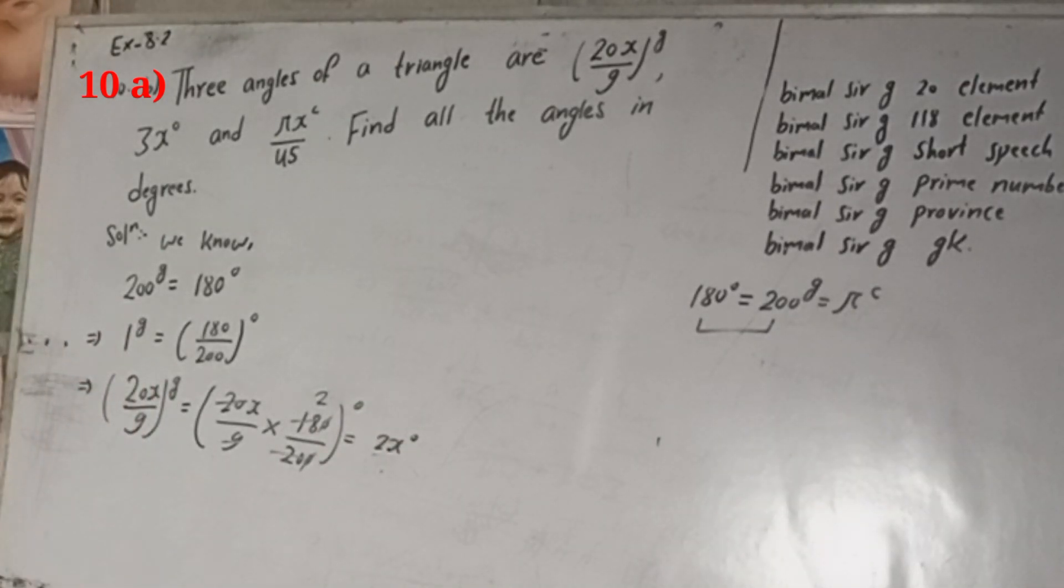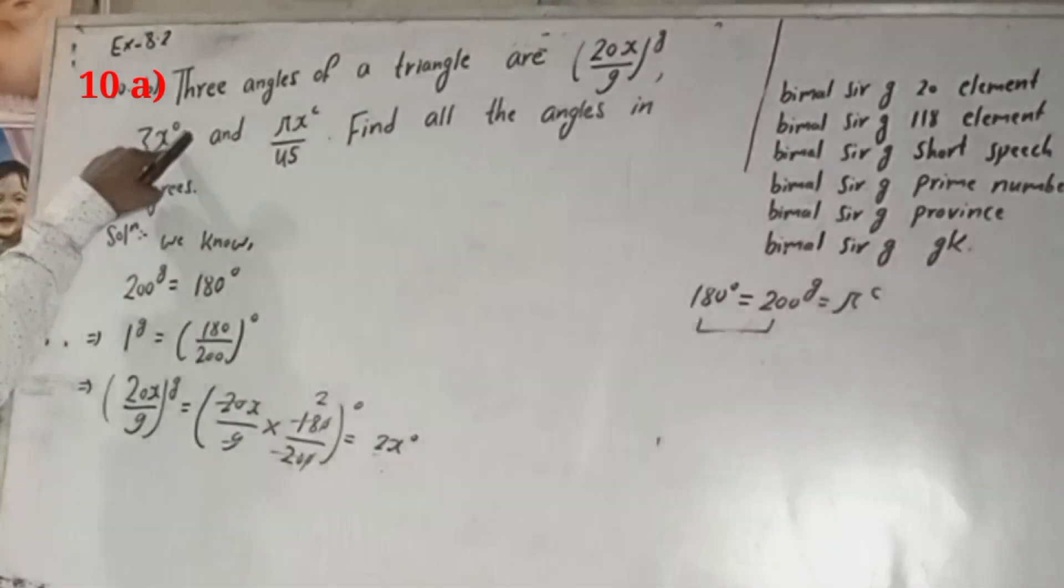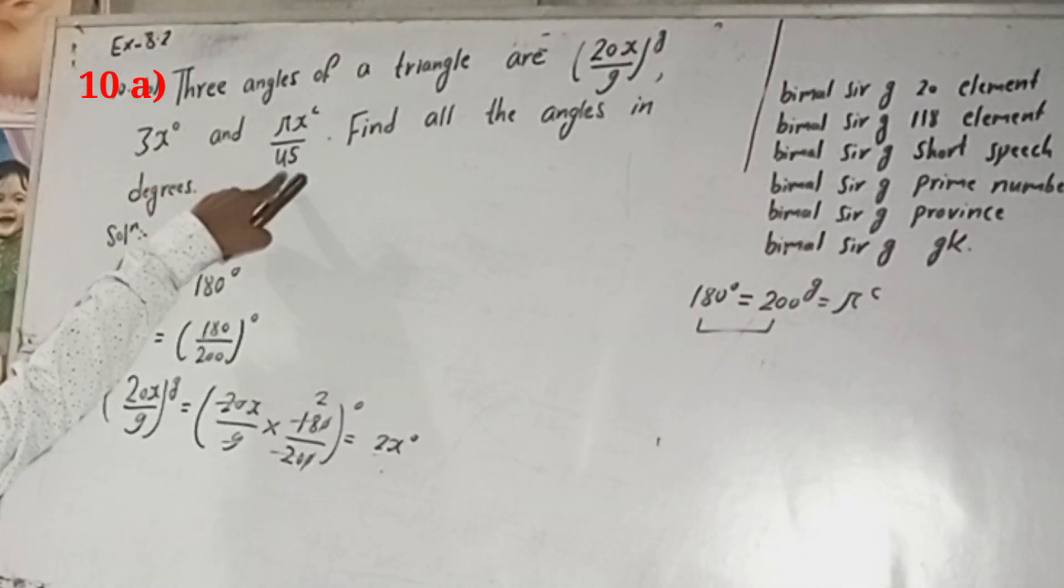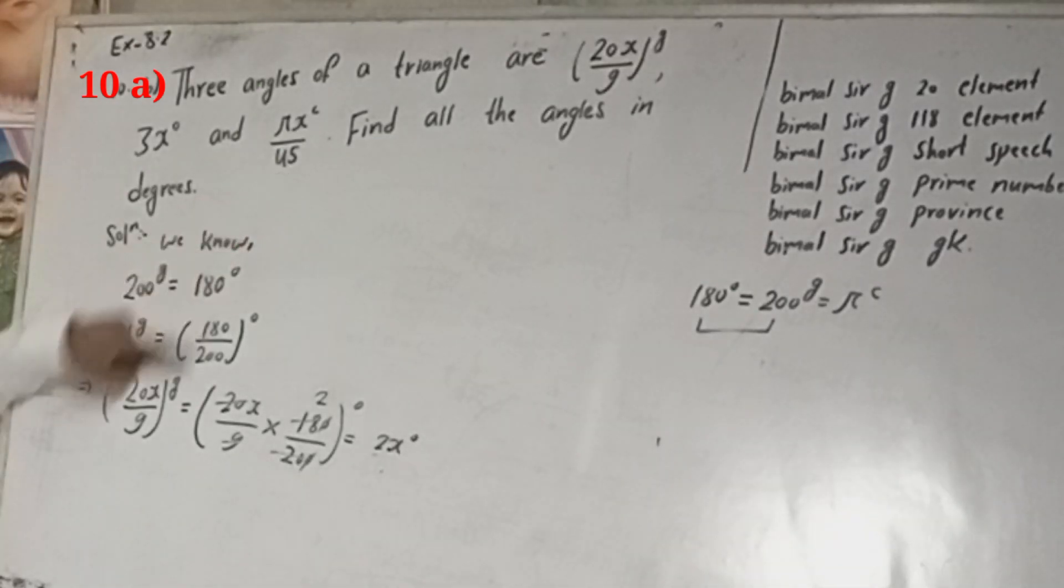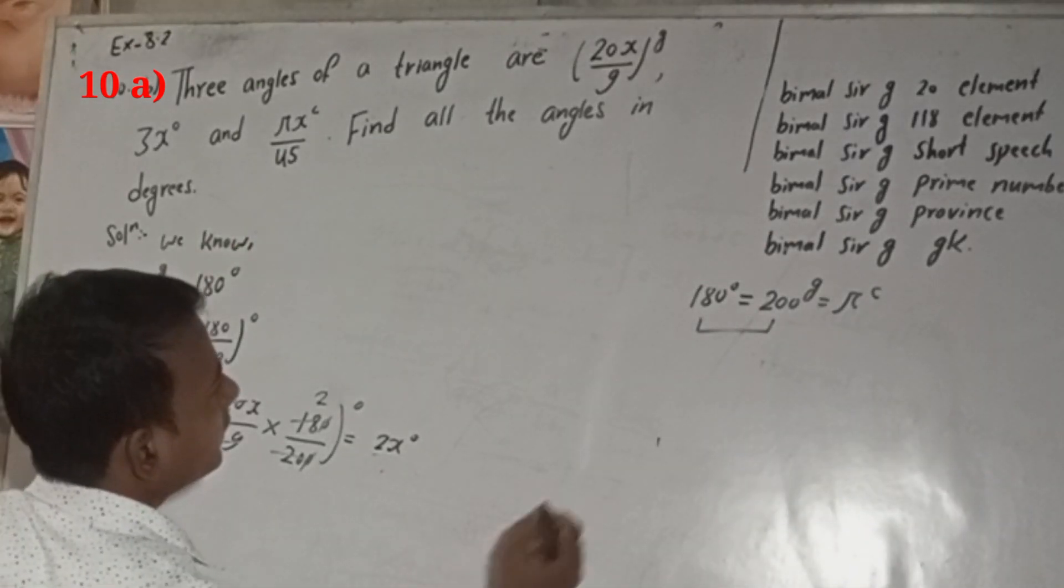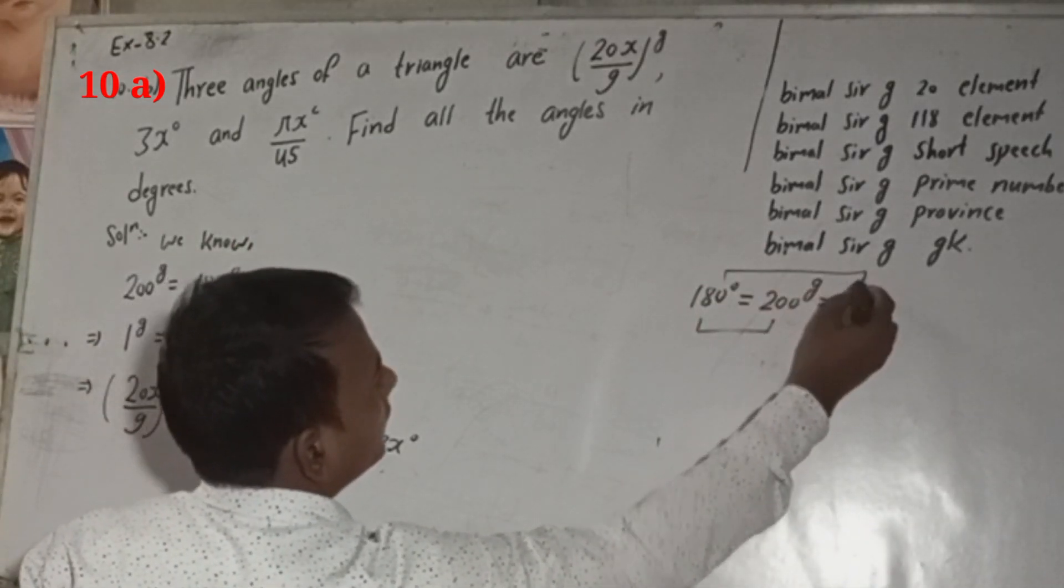And this 3x is itself in degree. Now we will change this radian into degree, so for that we have to take first and last relation.